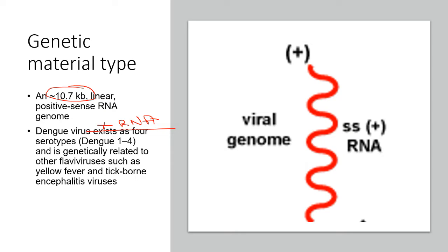The dengue virus exists as four serotypes: dengue 1, 2, 3, and 4. They are genetically related to other flaviviruses such as yellow fever virus and tick-borne encephalitis virus. They belong to the family of yellow fever and encephalitis virus family.